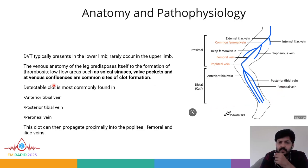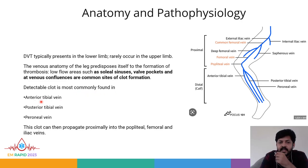Deep vein thrombosis typically presents in the lower limb and very rarely in the upper limb. The venous anatomy of the leg predisposes itself to thrombosis formation — low flow areas such as soleal sinuses, valve pockets, and venous confluences are common sites of clot formation. The detectable clot is most commonly found in the anterior tibial vein, posterior tibial vein, and peroneal vein, and this clot can then propagate proximally into the popliteal, femoral, and iliac veins.